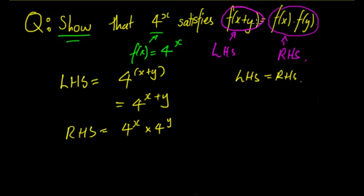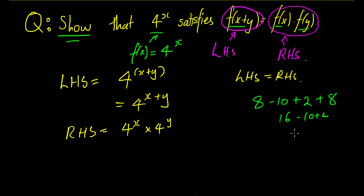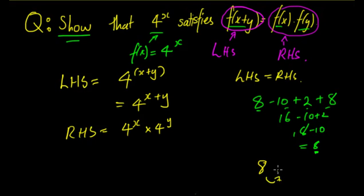When you have 'show that' questions, think about which side has more terms. The right-hand side has two terms (4^x and 4^y) and the left-hand side has one. It's typically easiest to simplify the side with more terms down to match the side with fewer terms — just as simplifying 8 − 10 + 2 + 8 down to 8 is easier than expanding 8 into four specific terms.